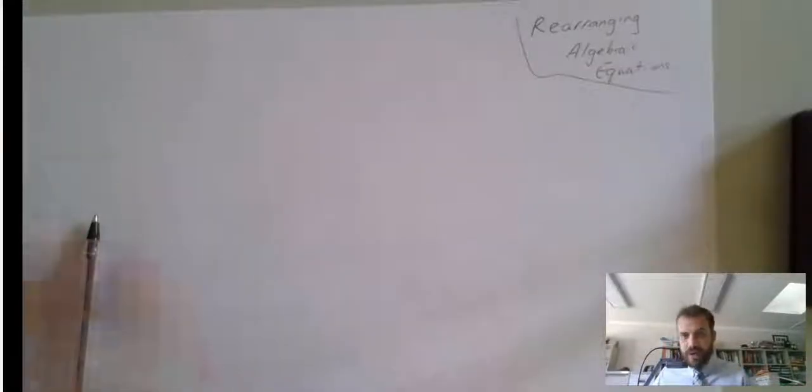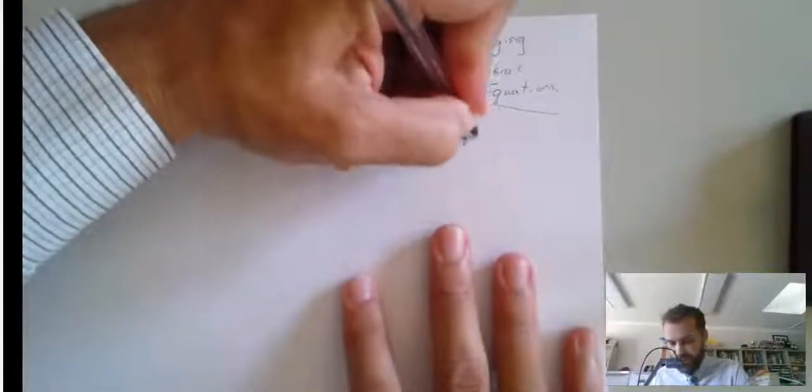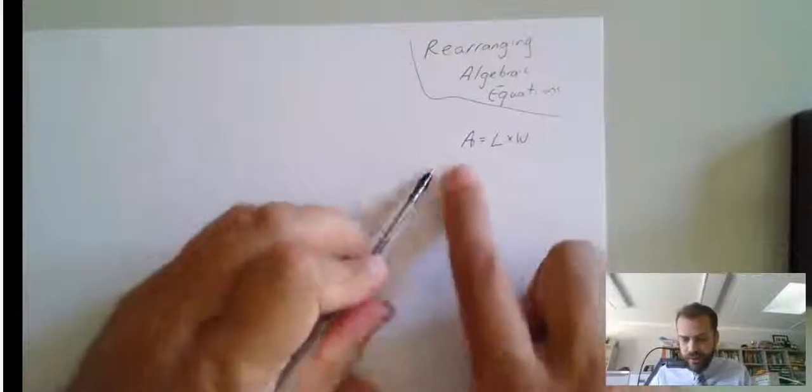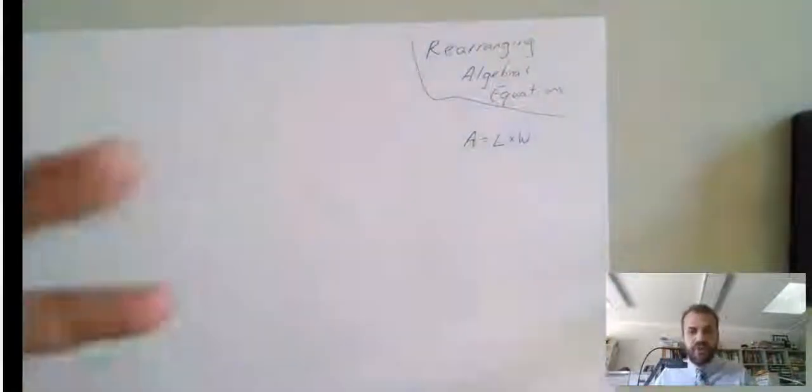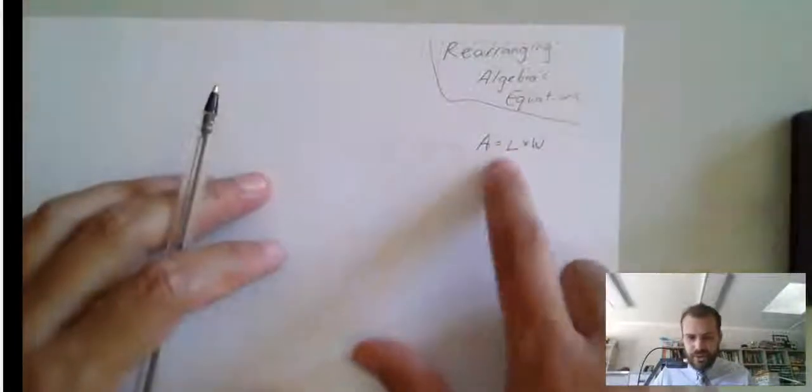But in an algebraic equation, let me give you an algebraic equation you're familiar with. So, area equals length times width. In this algebraic equation, there are no numbers. There's just letters everywhere.